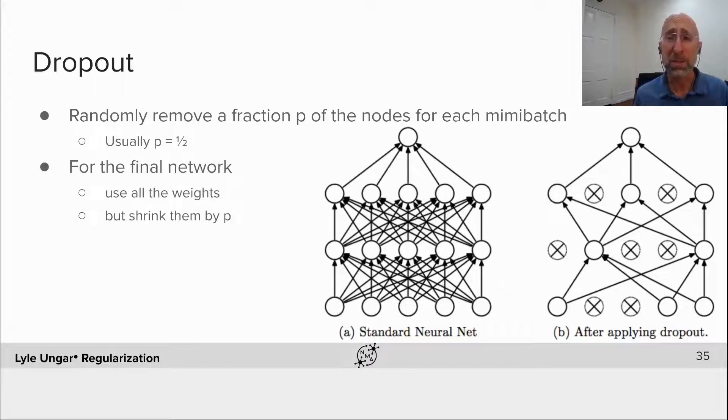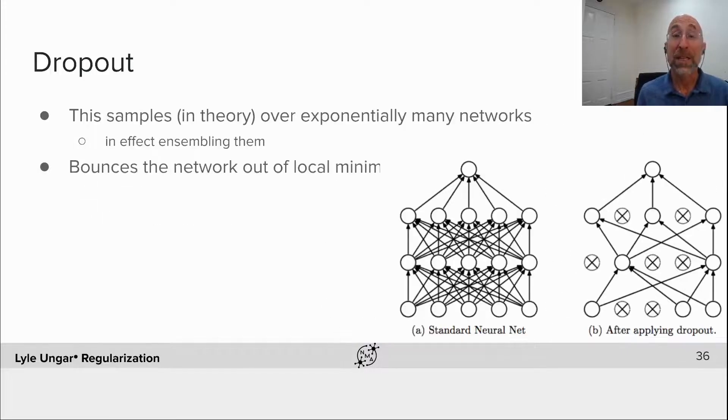This dropout procedure seems incredibly ad hoc, but it actually has quite nice theory. It samples in theory over exponentially many networks, sort of like doing an ensemble of networks. You might want to build thousands of networks then average them all. That works very well in theory, but in practice it's too expensive.